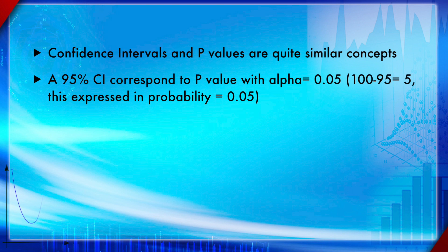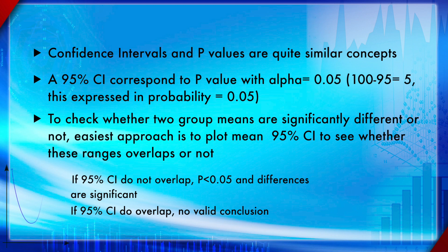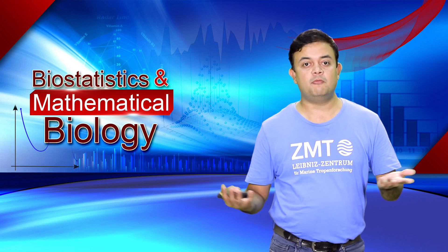That 5% significance level corresponds to the tail part of the bell diagram. To check whether two group means are significantly different or not, the easiest approach is to plot the 95% CI of the two group means and see whether they are overlapping or not. If they do not overlap, you can instantly conclude that the p-value is less than 0.05 and the differences are statistically significant. If they overlap, no valid inference can be made.